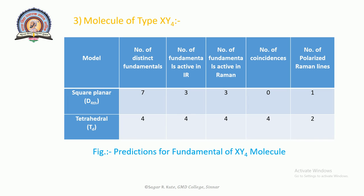Thus the procedure based on symmetry, vibrational selection rules, polarization of observed lines, together with the identification of molecular constituents based on the group frequency concept, makes IR and Raman spectroscopy a powerful tool for the determination of molecular structure.